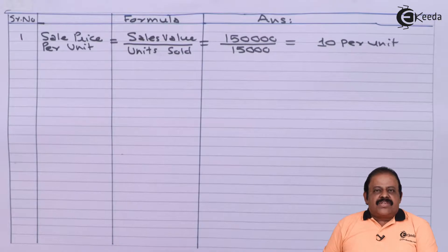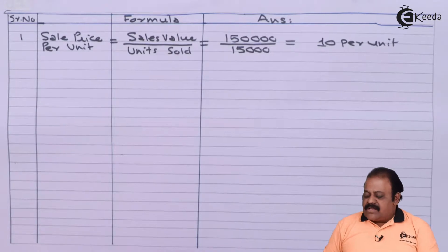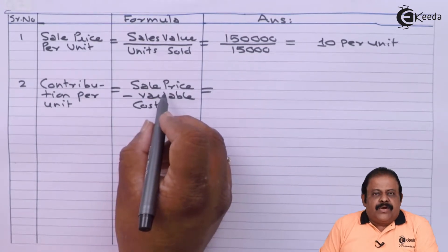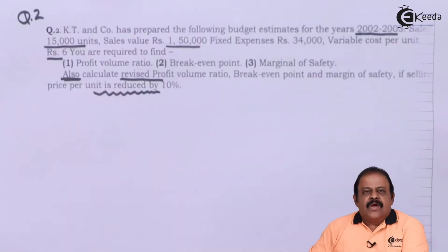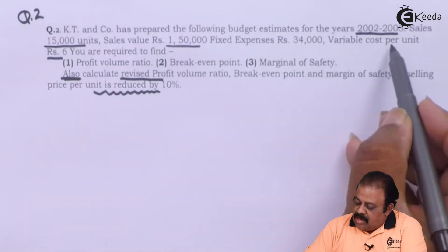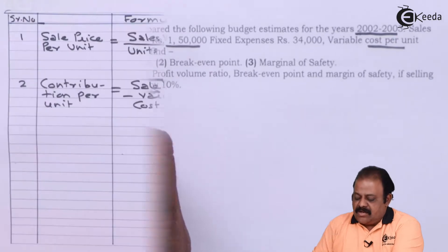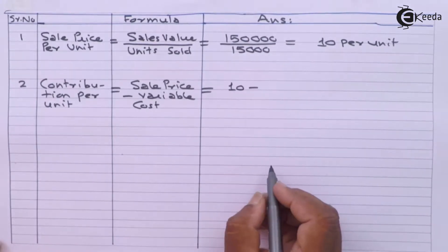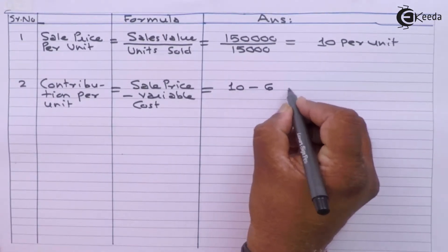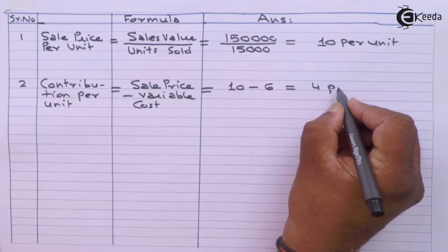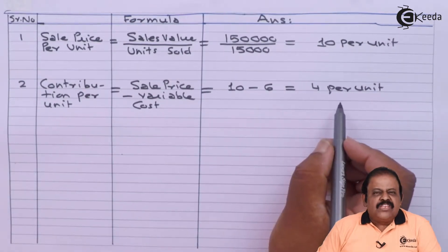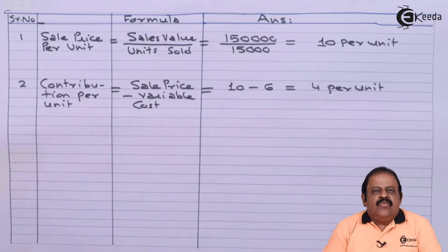Now let us proceed to find out contribution per unit. The formula for contribution per unit is sale price per unit minus variable cost per unit. Sale price is ₹10 and variable cost per unit given in the question is ₹6, so we get contribution per unit of ₹4.